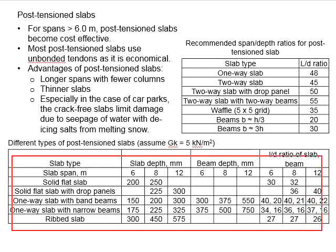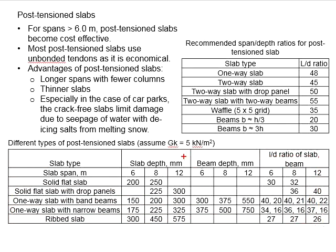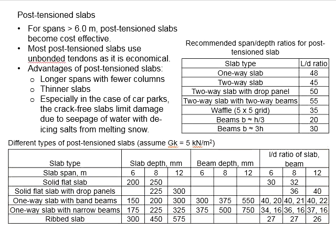These values are recommended based on an assumed dead load of gk = 5 kN/m². You may use this as a guideline for designing pre-stressed concrete members. At the end of the day, you will need to check the adequacy of the proposed sections to confirm that the slab passes under the intended service load.